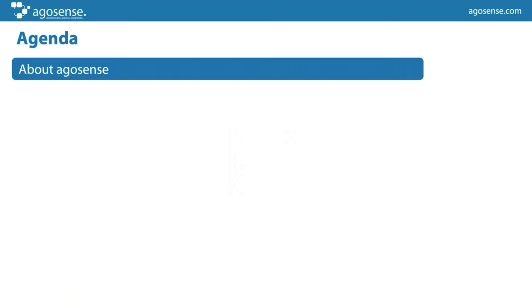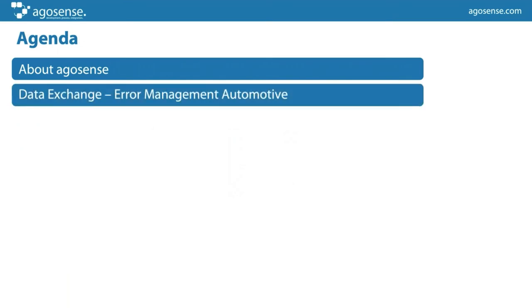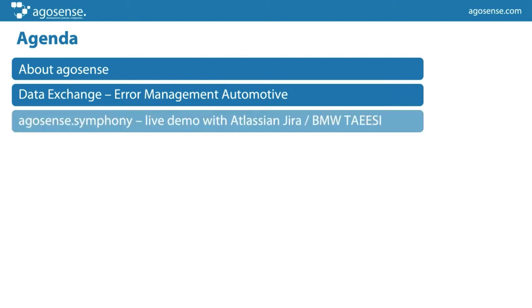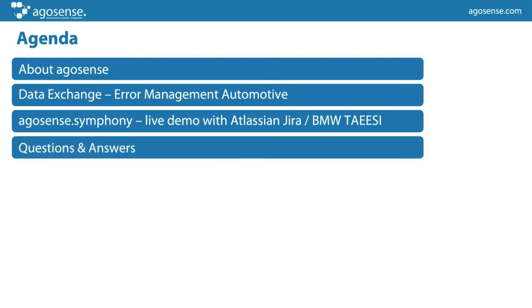The agenda for today: we have prepared a few words about Argusons, followed by a few slides about our product and especially the topic of data exchange more in general. Then we will see a live demo of Symphony itself together with live data exchange between Glass and Jira and the BMW KAC portal. At the end we will answer all your questions raised during or at the end of the webinar.